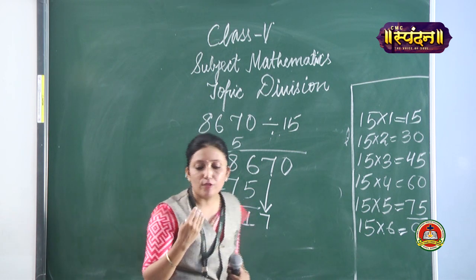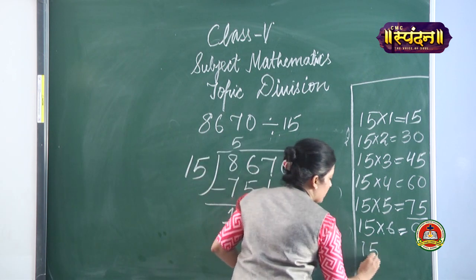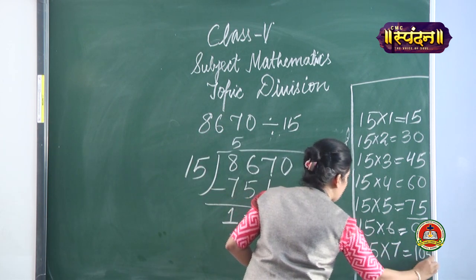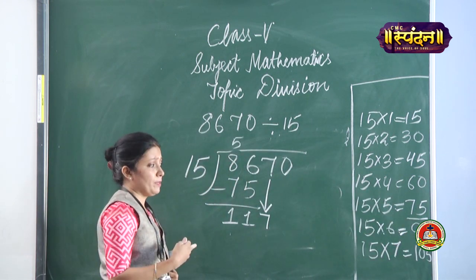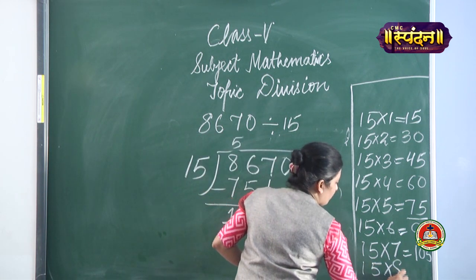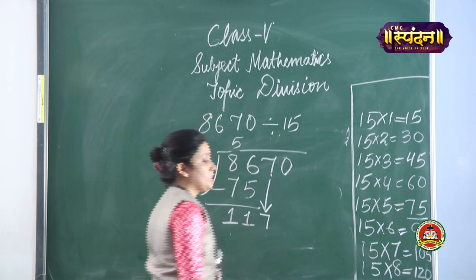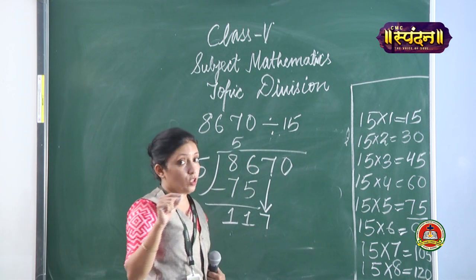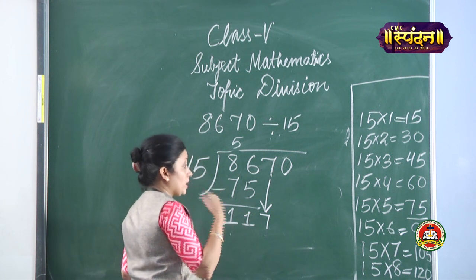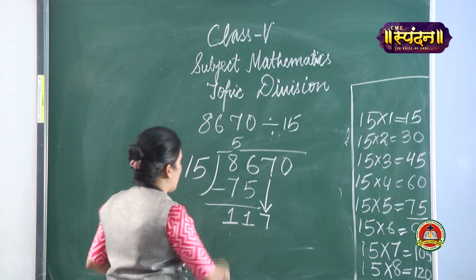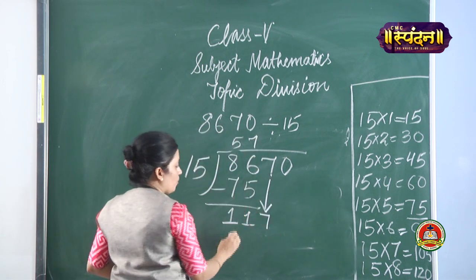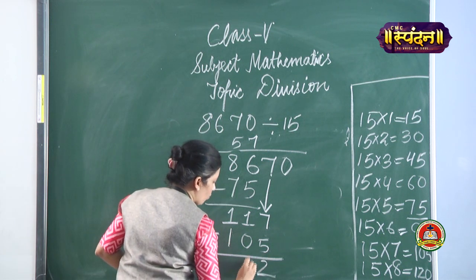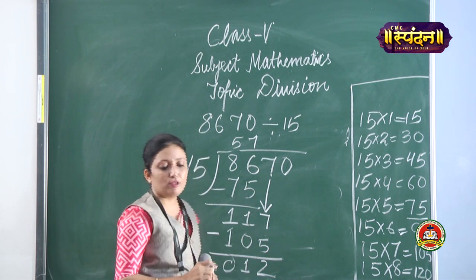Now with 117: 15 sevens are 105, and 15 eights are 120. Since 120 is larger than 117, we take 105. Write 7 in the quotient. Subtract 117 minus 105: 7 minus 5 is 2, and 1 minus 0 is 1, leaving 12. Bring down the next digit 0, making 120.